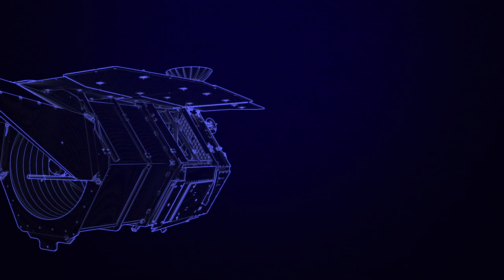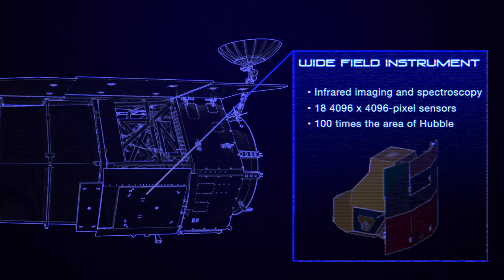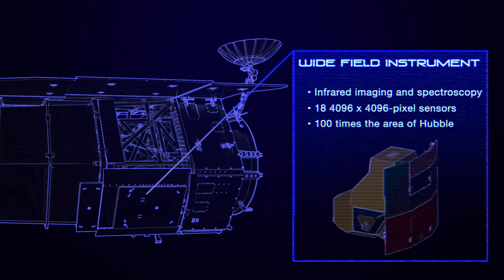Roman's main camera is the wide-field instrument, which will take infrared pictures of the sky to study dark energy, observe galaxies and stars, and find exoplanets.